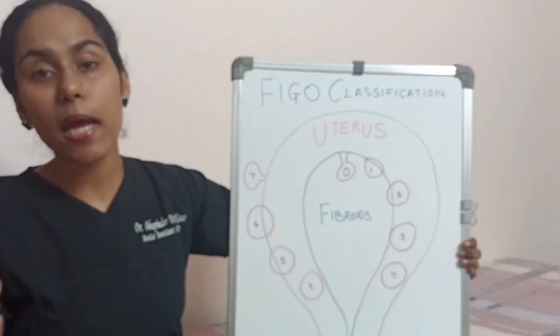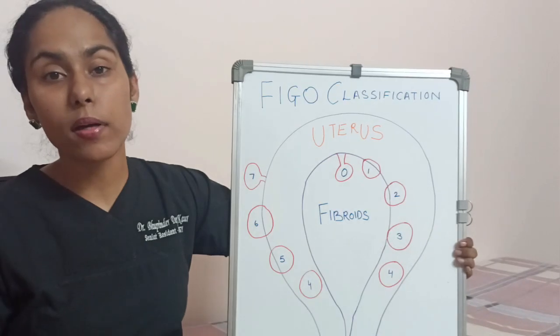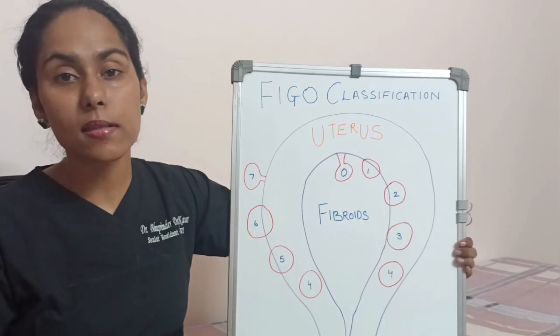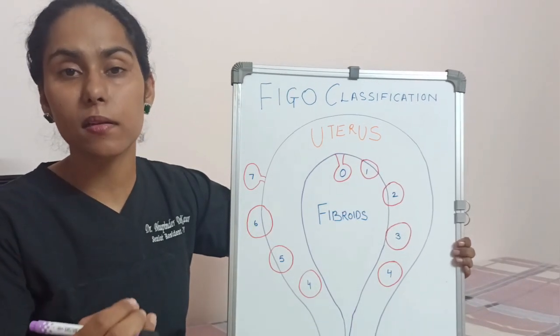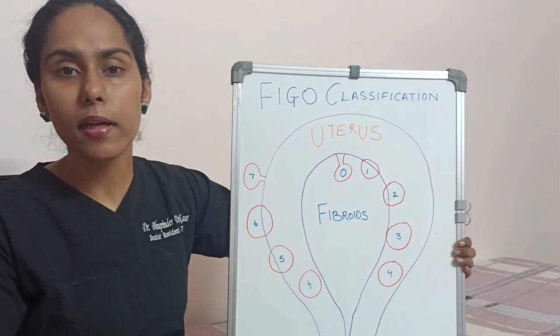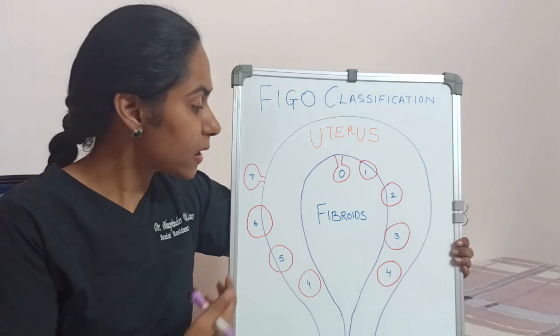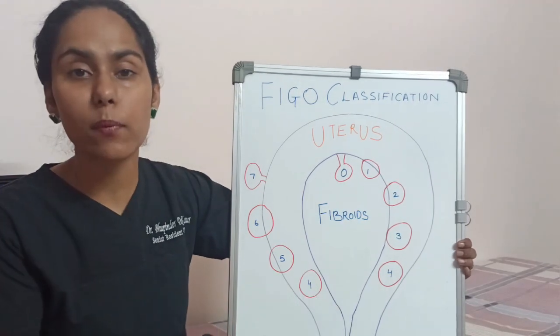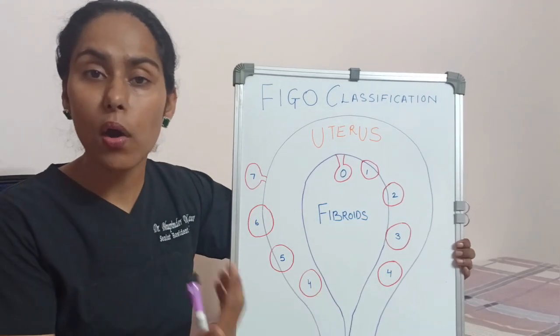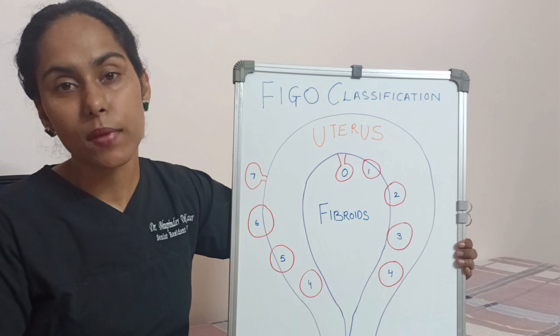Type 8 fibroids are called parasitic fibroids. These can include any broad ligament fibroid or a cervical fibroid.